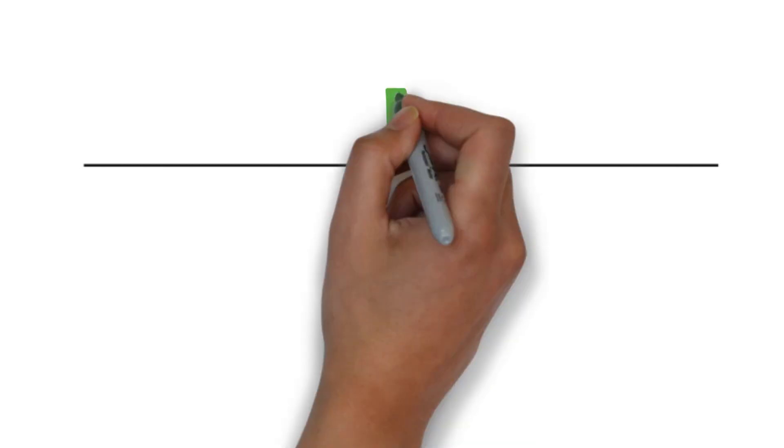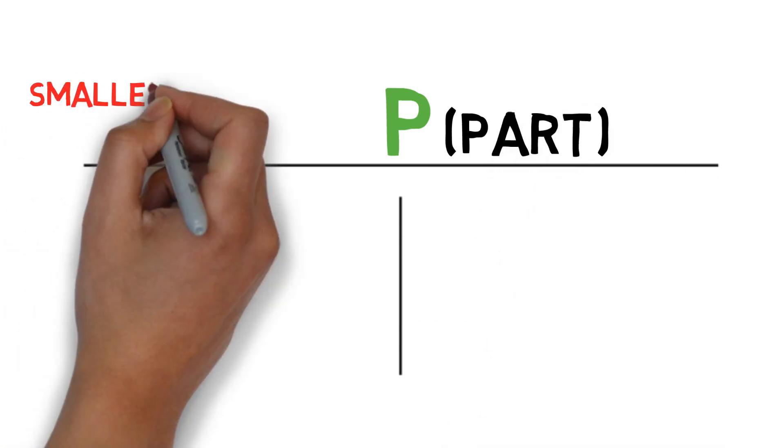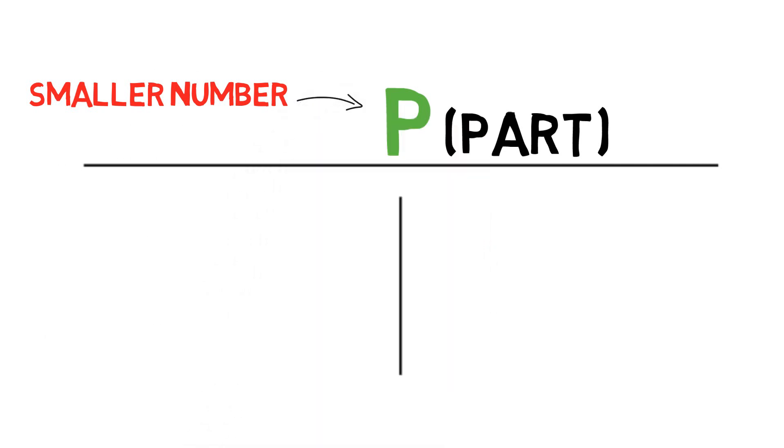The first thing we do is we draw a T. A lot of folks will refer to this as a T formula. In the T formula, the P stands for the word part, which is always the smaller number in the equation or problem. The part always goes on the top.